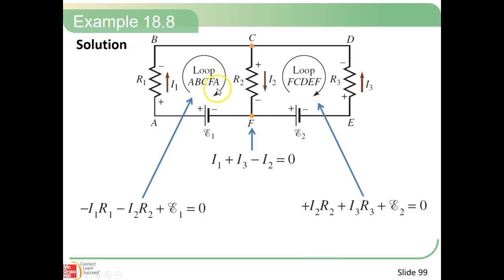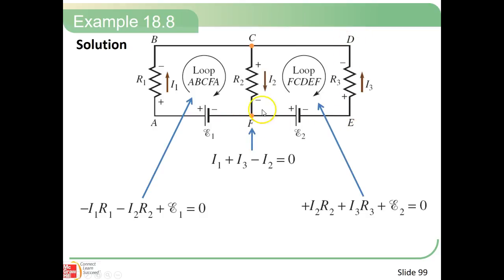When we look at Kirchhoff's rule here, we're going to look at loop ABCFA. So we start at A, go to B, over to C, back down to F, and then back through A. That's your first loop. For this one, we do negative I1·R1 minus I1·R2 plus the battery voltage. On the other side, we've got loop FCDEF, and that gives us positive I2·R2 plus I2·R3 plus E2, and that should equal zero.